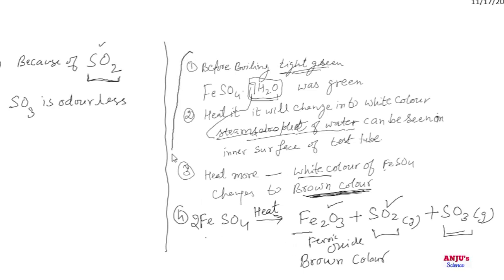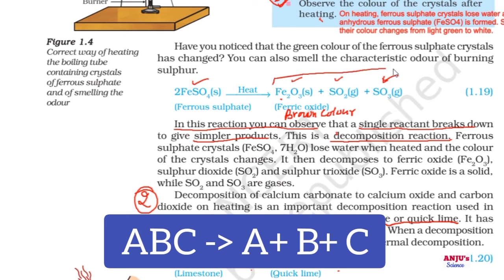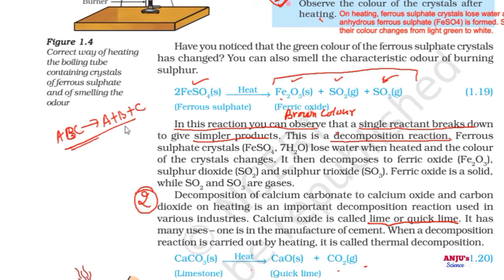These are our observations from this activity. This reaction is a decomposition reaction. Why do we call it a decomposition reaction? Because in this reaction, a single reactant breaks down to give simpler products — one single reactant gives three products. This is opposite to a combination reaction. Ferrous sulfate crystals lose water when heated and the color changes, then decompose to ferric oxide, sulfur dioxide, and sulfur trioxide. Ferric oxide is solid while sulfur dioxide and sulfur trioxide are gases.